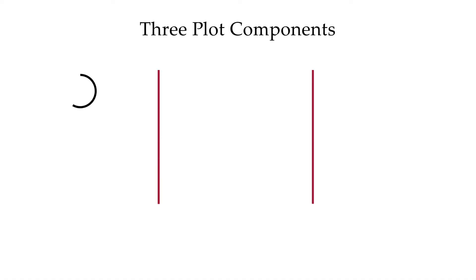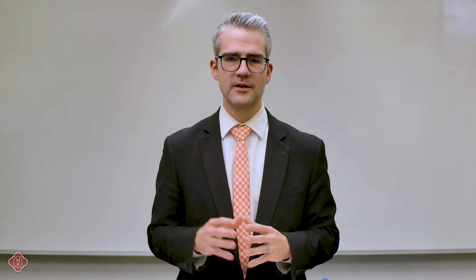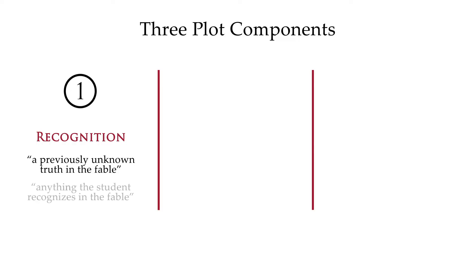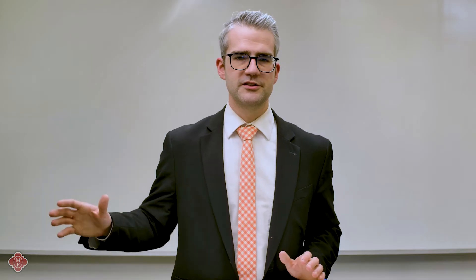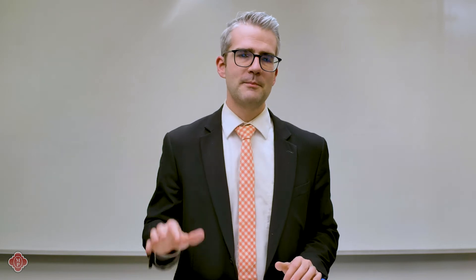A recognition occurs in two ways in a story. First, the recognition is when your student discovers a truth in the Fable that they previously didn't recognize. For instance, in the Bible, when you read the story of Joseph, the recognition is realizing that Joseph's suffering was intended by God for good. The second kind is anything the student recognizes in the story — for instance, if a character runs in the story, a student will recognize that because he's run before. In Fable, we primarily focus on this second kind of recognition.